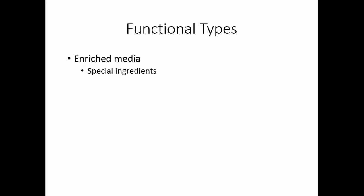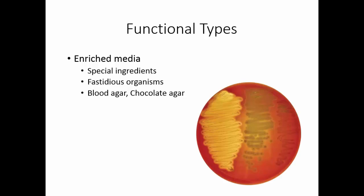Enriched media is another functional type. Enriched media has special ingredients that provide special nutrition for certain organisms called fastidious organisms — organisms that are picky eaters and need something special in their diet or they won't grow. Blood agar and chocolate agar are examples of enriched media. Blood or the laked blood in chocolate agar provides heme, proteins, or certain things some organisms need to grow.